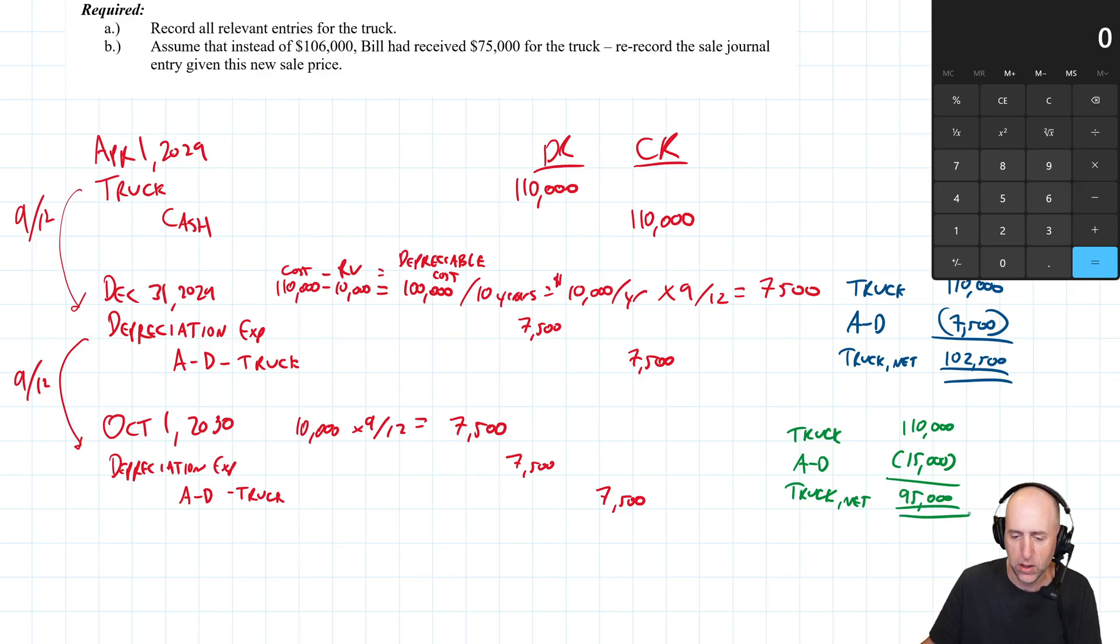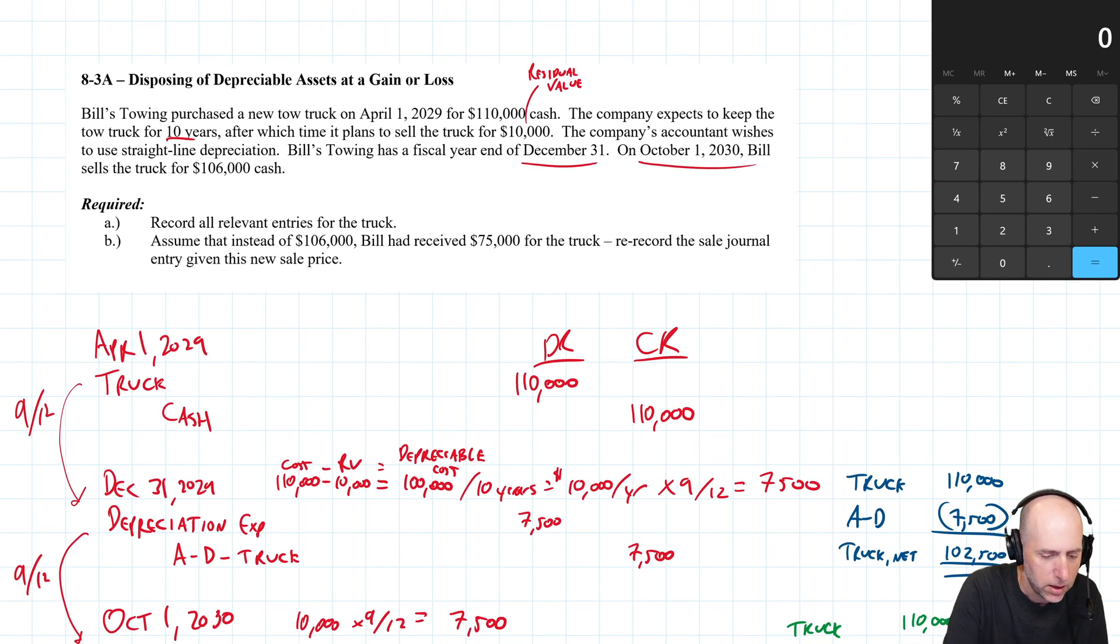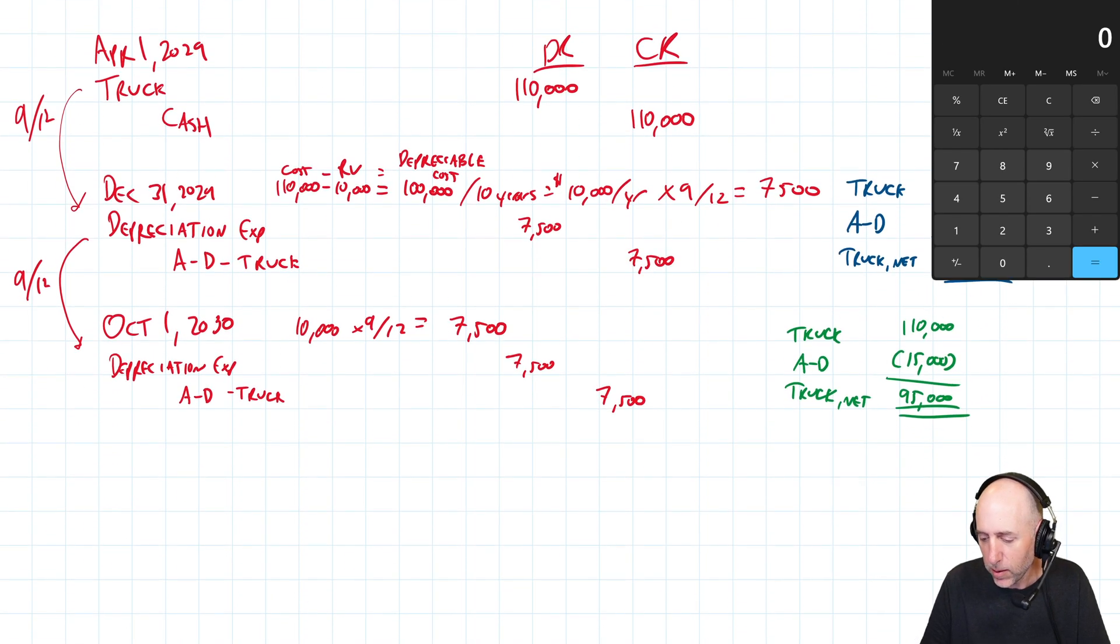Bill turns around and sells the truck for $106,000 cash today. Does this mean he got a good deal or a bad deal? The answer is we don't know. Maybe the value of these used trucks has gone up for some weird reason and he really should have got $120,000 for it. We just know that he got paid more than the accountant in their accounting office thinks the truck ought to be worth. The accountant thinks it ought to be $95,000, Bill got paid $106,000. He got paid $11,000 more than the book value of the truck. There's two options when you dispose of an asset: you're going to sell it at a gain or at a loss. If you got paid more than the accountant thought it was worth, it's a gain. If you got paid less, it's a loss.